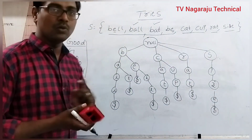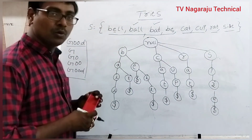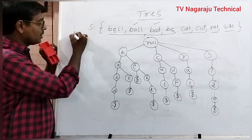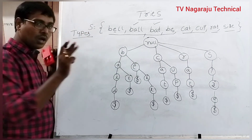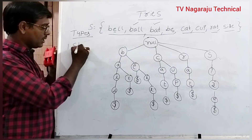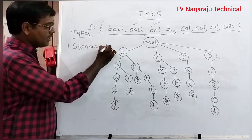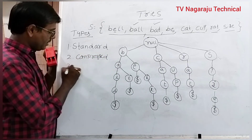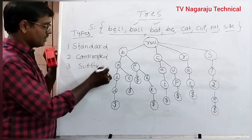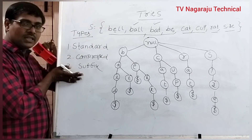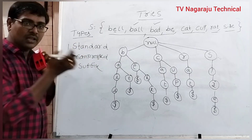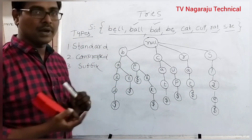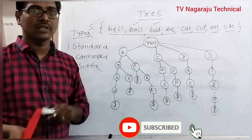This is the way to represent a trie. Now, what are the different types of tries? We have three types: the first one is the standard trie, the second one is the compressed trie, and the third one is the suffix trie. In the next two sessions, we will discuss each type with an example — how to construct the standard trie along with the compact representation. This is the concept of tries. Thank you.